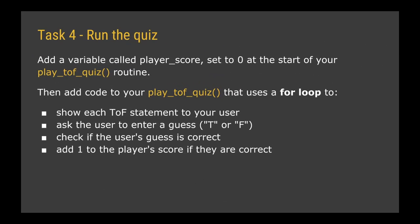For task four, I thought I'd show you what the task is before showing you how to do it, in case you feel confident to try it yourself. To run the quiz, you need to add a variable called player_score set to zero near the start of the play_tof_quiz routine. Then add code using a for loop to show each true or false statement, ask the user to enter T or F, check if their entry is correct, and if so add one to the player's score.